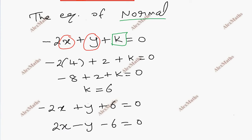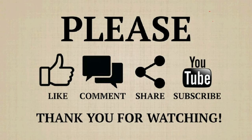This is the equation of normal: 2x + y + 6 = 0.